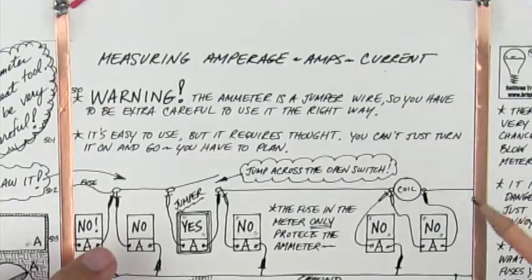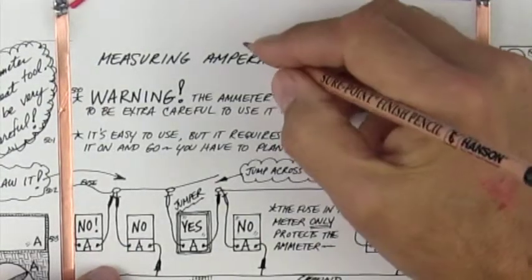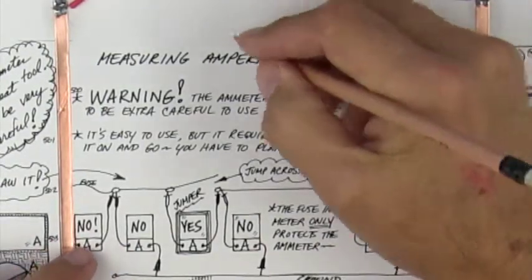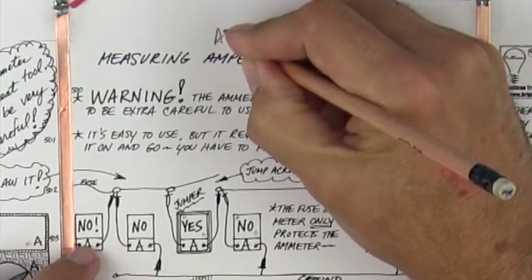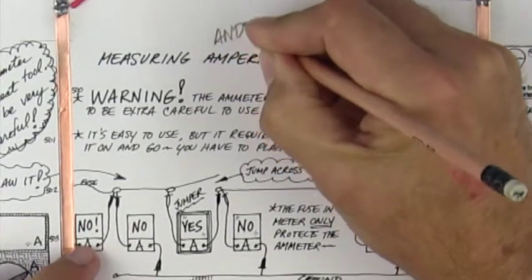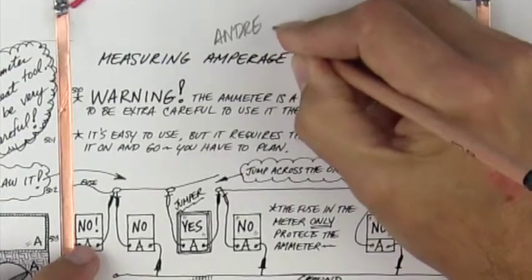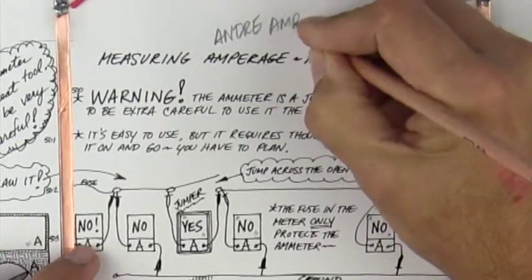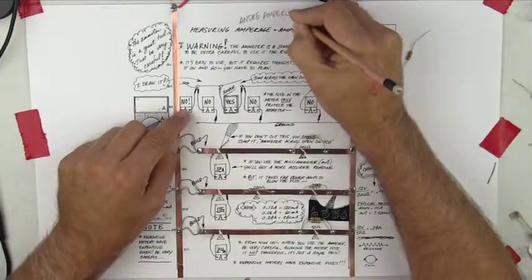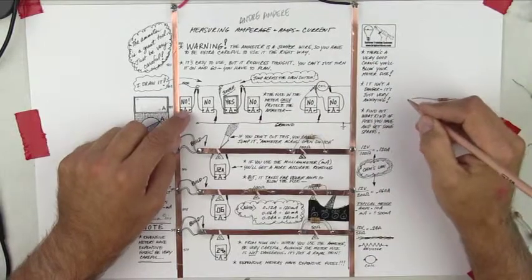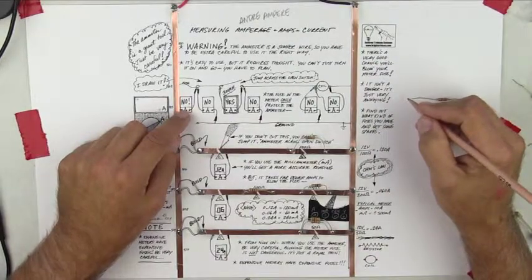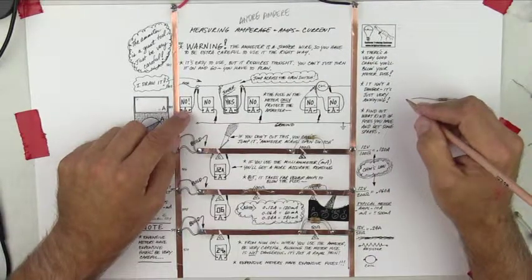In case you're interested, the fellow who figured out the whole current flow thing, his name was Andre Ampere, a French dude. I think he's French. At any rate, the amp meter...